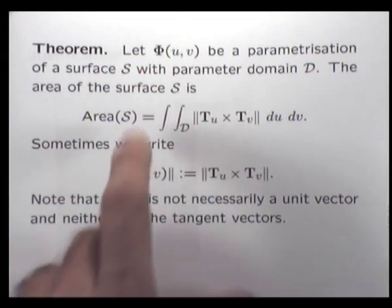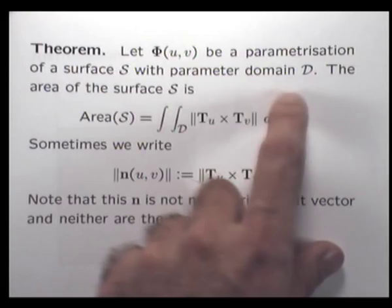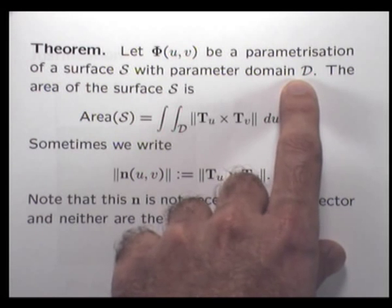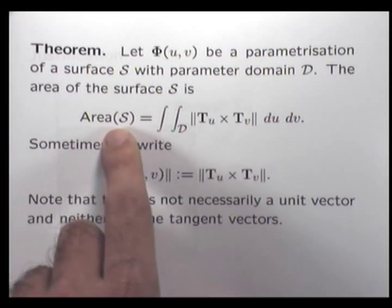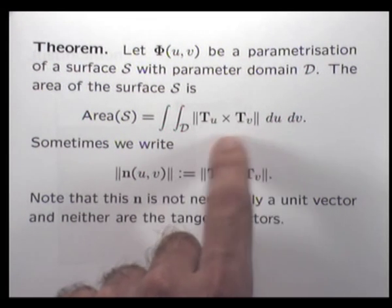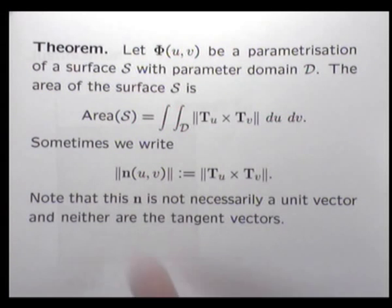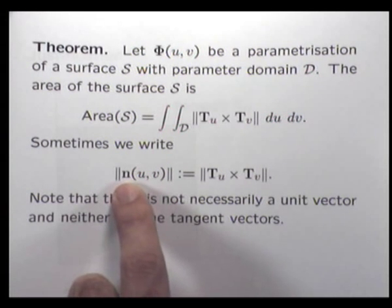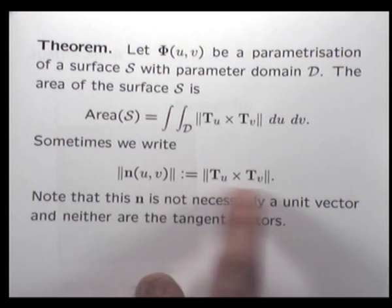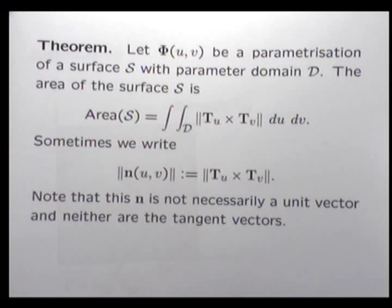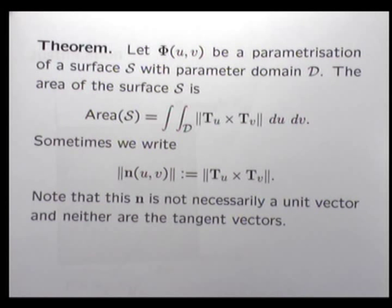Suppose we have a parametrization of some surface with domain D. The surface area of S is this double integral. In some texts, it's customary to write this N vector for this particular cross-product. But be careful — this normal vector N is not necessarily a unit vector, and the tangent vectors are not necessarily unit vectors either.